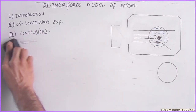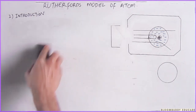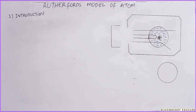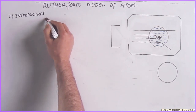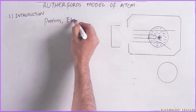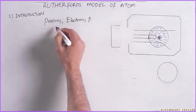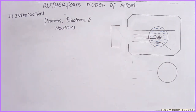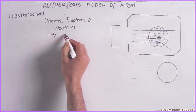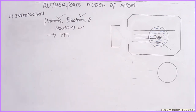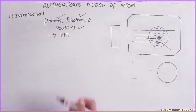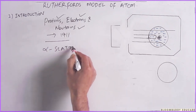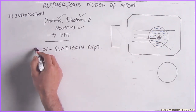So first of all, let's go through the introduction part. The discovery of electrons, protons, and neutrons made it clear that an atom is basically made up of three fundamental particles: protons, electrons, and neutrons. These things were known before Rutherford's model of atom came into being. Rutherford proposed this model in 1911, and by that time protons, electrons, and neutrons were already discovered. In order to know how and why these particles are located in an atom, Rutherford performed the alpha scattering experiment.